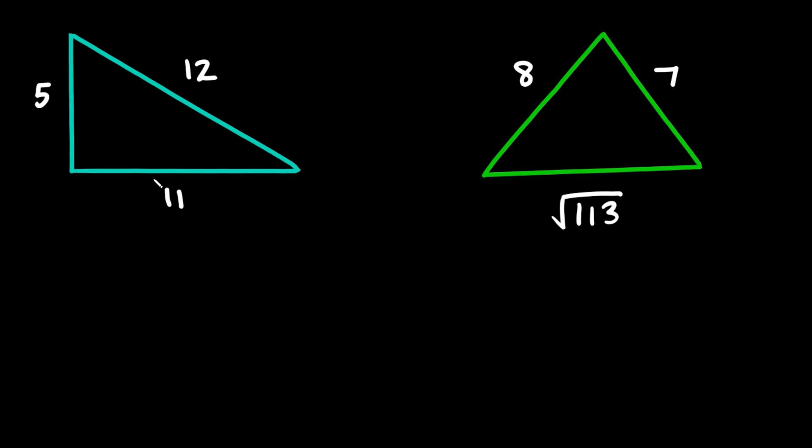In order to do that, all you need to do is plug in the three sides of your triangle into the Pythagorean theorem. That's this guy right here: a² + b² = c².